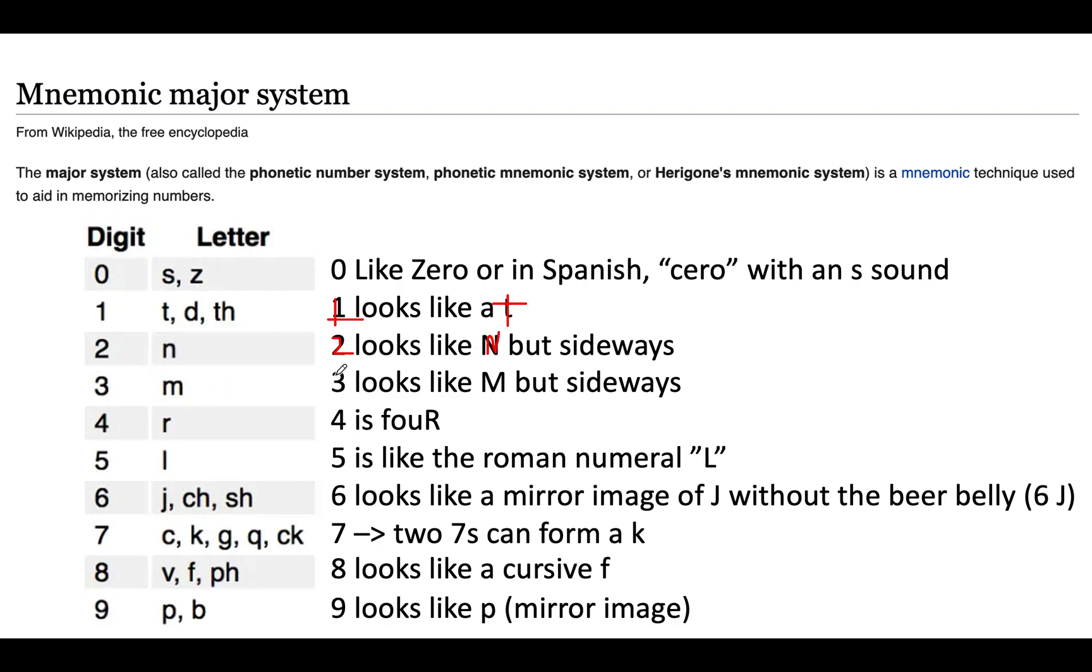Three is an M because it looks like M but sideways. So three and three. Four is four because it's the end of four. You can also argue that four kind of looks like R as well if you, it's kind of like mirror images almost. They both have a head.